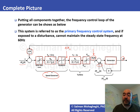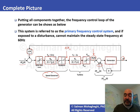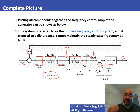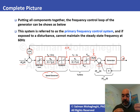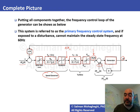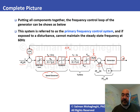This is known as the primary frequency control system, distinct from the secondary frequency control system (AGC). On its own, the primary system cannot restore frequency exactly to 60 Hz — it responds within a few seconds and brings frequency closer to 60 Hz, then waits for AGC to kick in. AGC operates on a minute timescale and is responsible for restoring frequency precisely to 60 Hz.